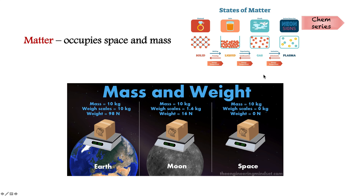Generally we have a thought that mass and weight are the same, but they are totally different. The mass of a substance is how much matter it contains, whereas weight refers to the force with which the object is attracted by gravity. For example, a box with 10 kg mass weighed in different gravitational environments still has the same mass, because mass only depends on the matter it contains. Earth's gravity is six times that of the Moon, and space has zero gravity — the mass remains the same, but weight differs because changes in gravitational force change the weight scales.